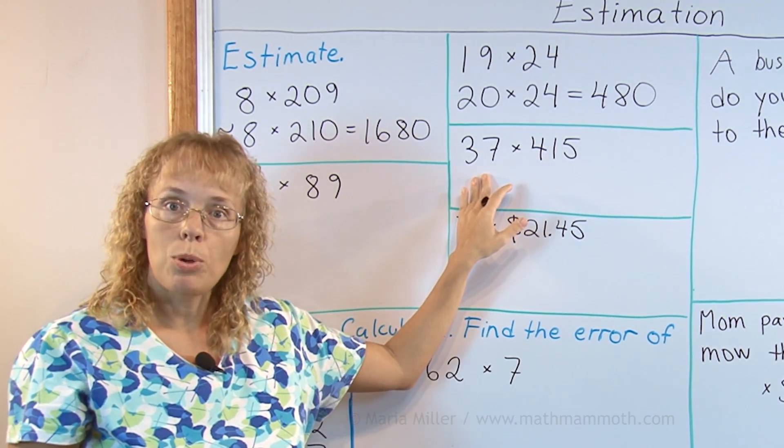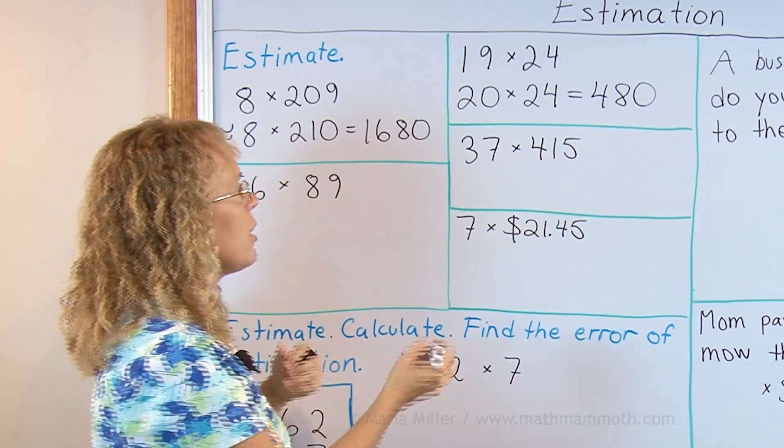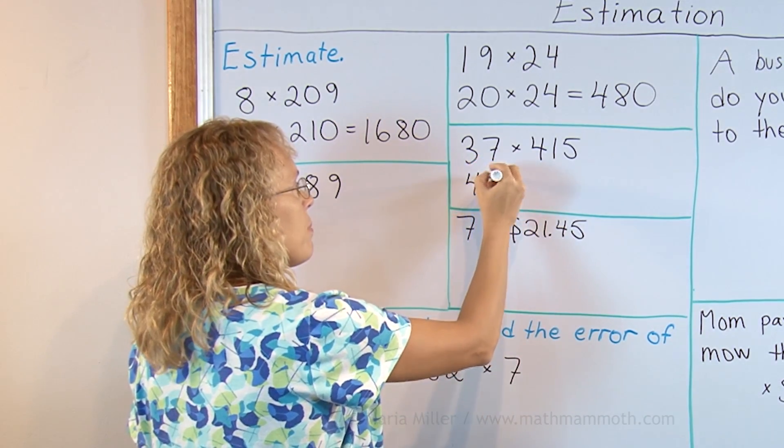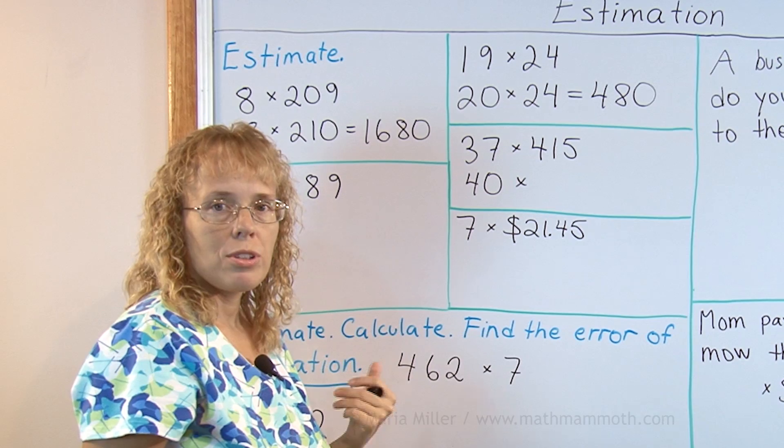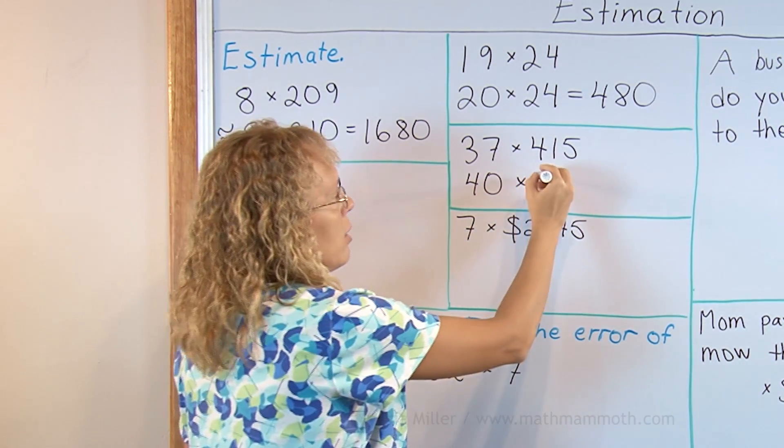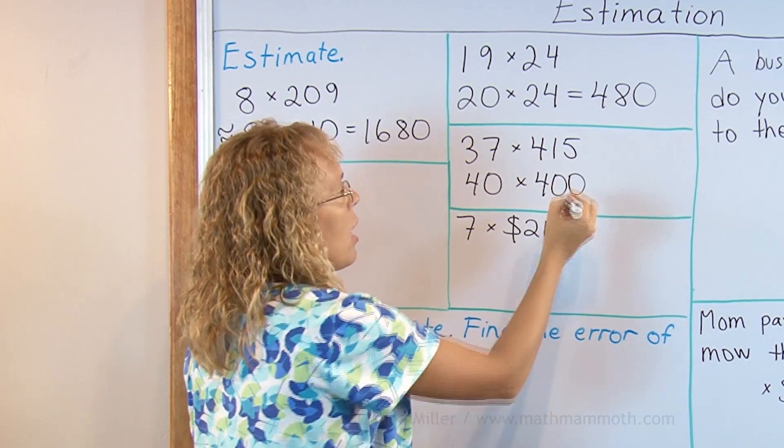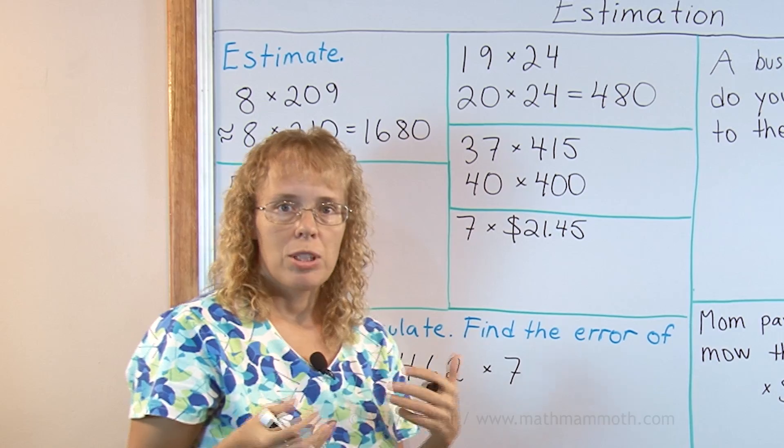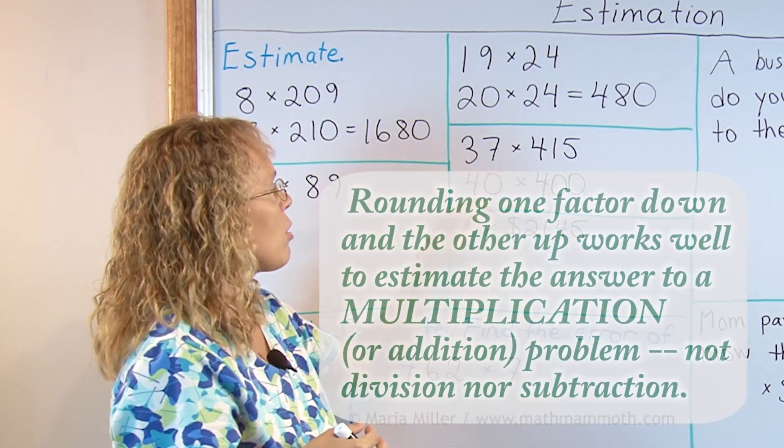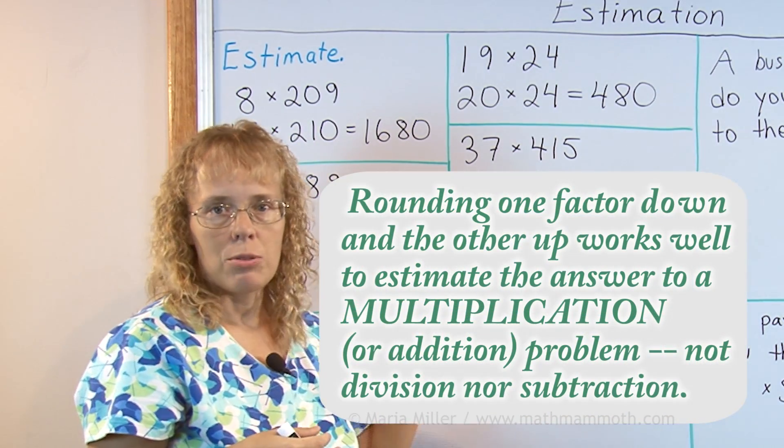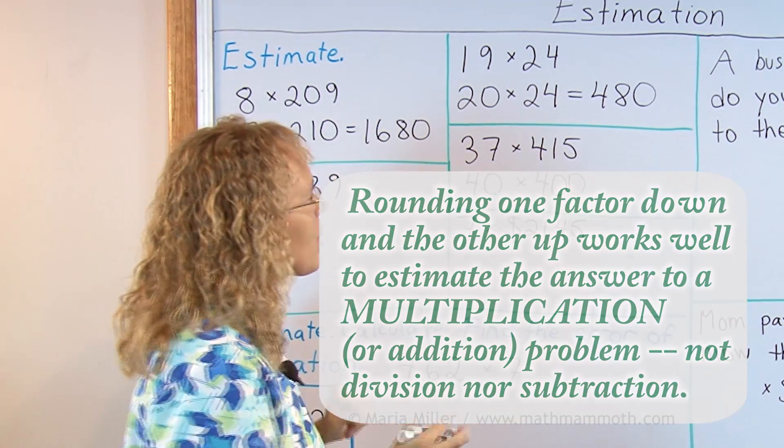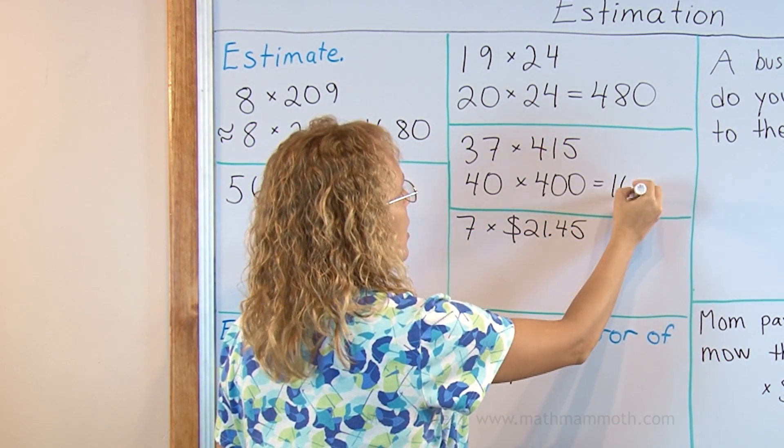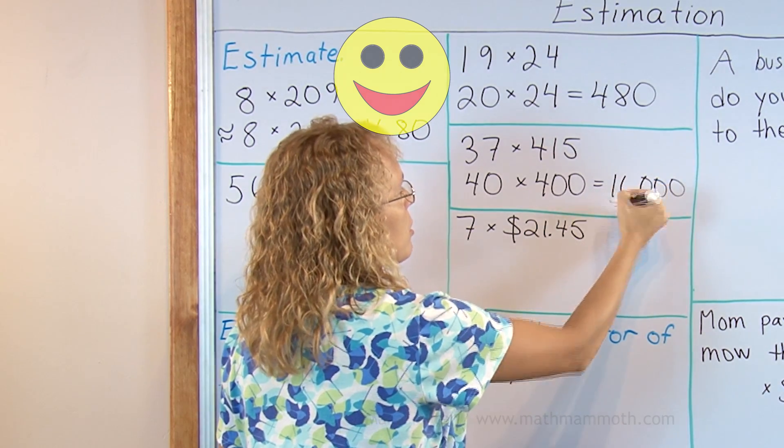Here I'm going to round both numbers. 37 I will round it up to 40 and 415 I'm going to round to the nearest 100 to 400 and it gets rounded down and that is good because when you're estimating rounding one factor up and another down is a good thing because then the error basically kind of balances itself a little bit. And so we will just get here 16 and 1000, 16,000.